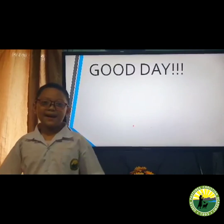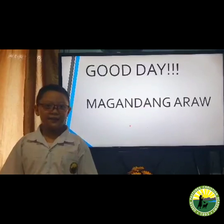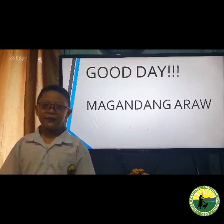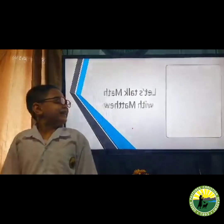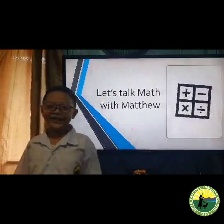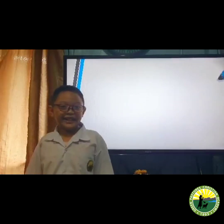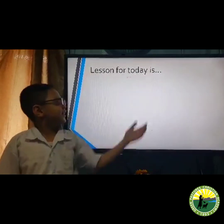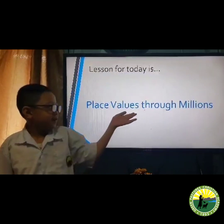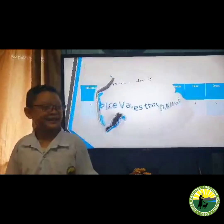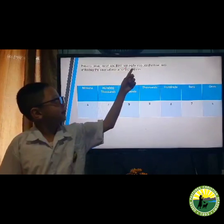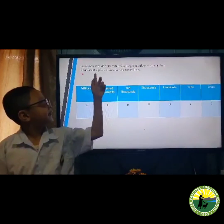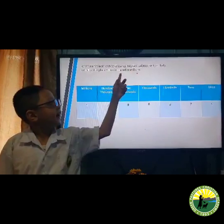Have a good day. My name is Matthew A. F. Arganyosa. I am in Grade 4 at GTCA. Our lesson for today is Place Values Through Millions. Here is an example of how drawing the place value chart can help in finding the place value of a number in millions: millions, hundred thousands, ten thousands, thousands, hundreds, tens, and ones.